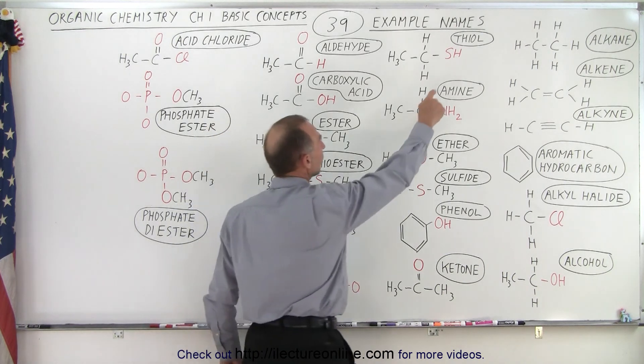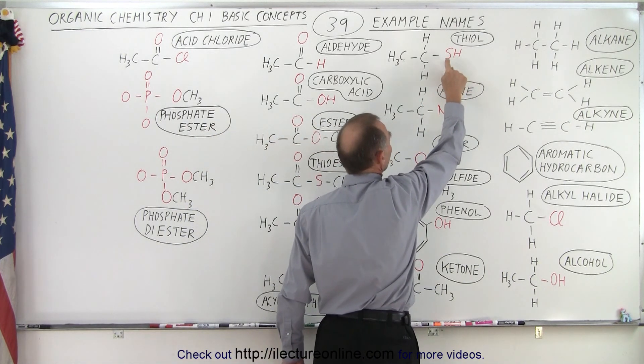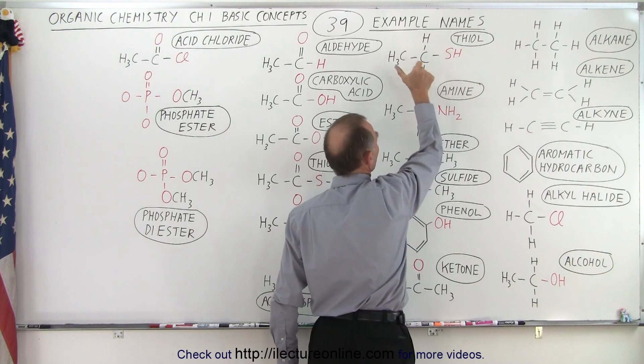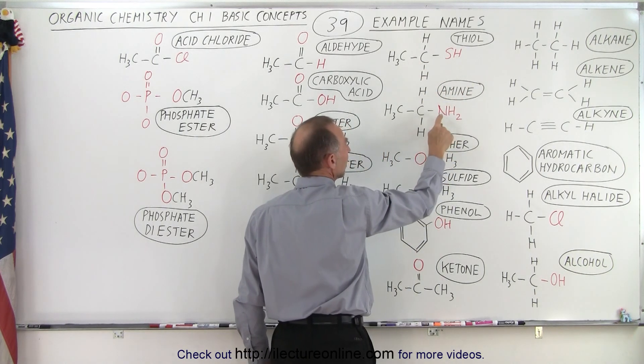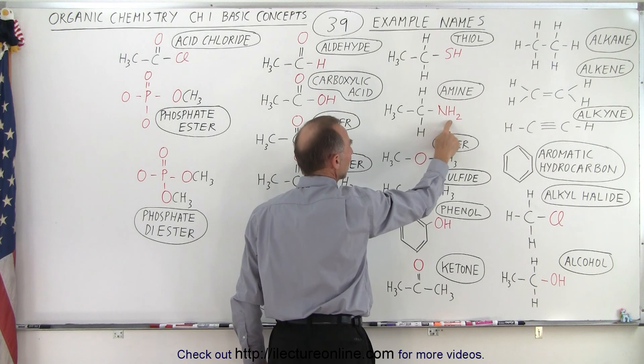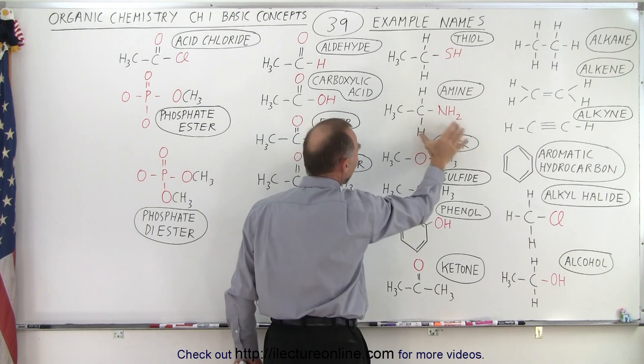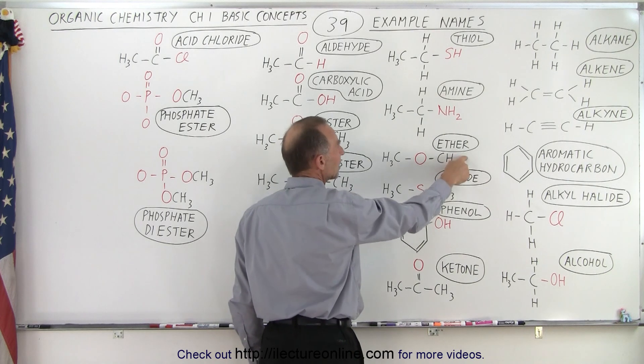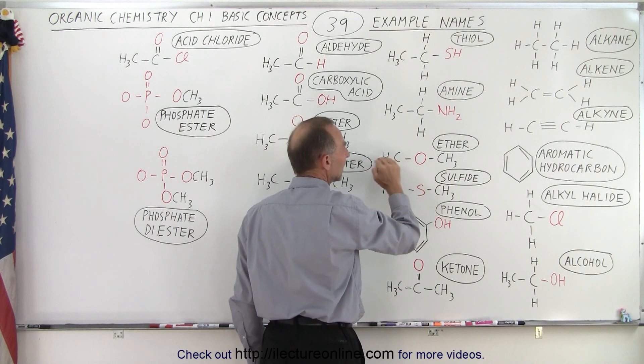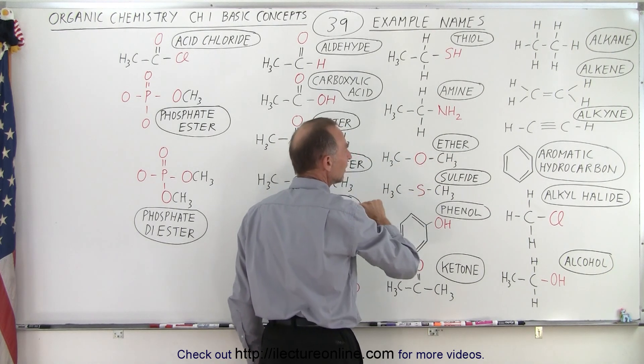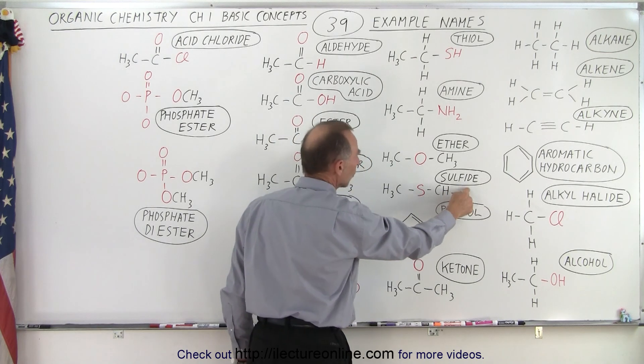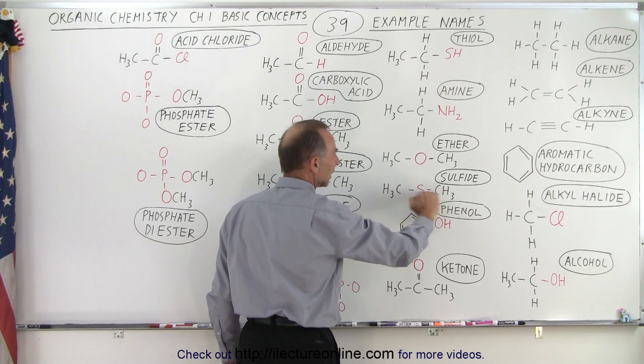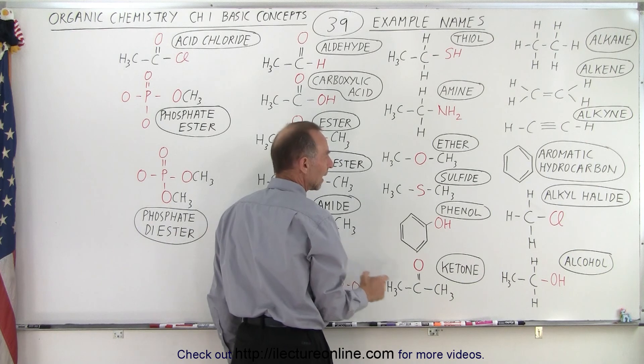Here we have a thiol and we recognize that because we have a sulfur and a hydrogen attached to the carbon group. Here we have an amine because we have an NH2, nitrogen H2 attached to the carbon chain. Here we have an ether which means we have an oxygen embedded in the carbon chain. And here we have a sulfide where we have a sulfur embedded in the carbon chain.